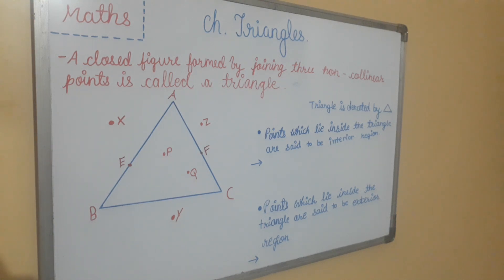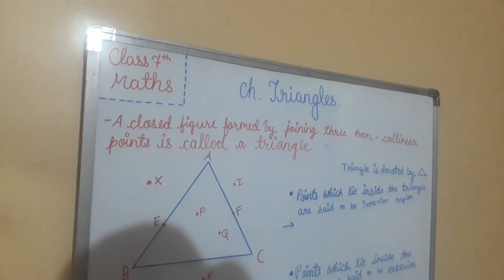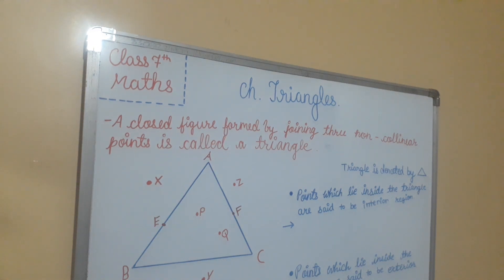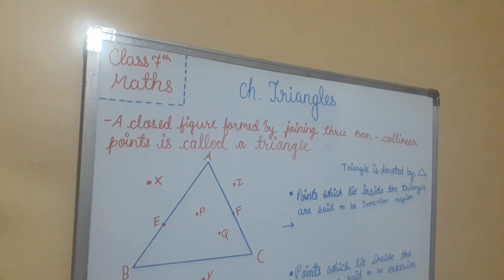A closed figure formed by joining three non-collinear points is called a triangle. A triangle has three vertices namely A, B, C; three sides namely AB, BC and AC; and three angles namely angle A, angle B and angle C. The three angles and the three sides are known as the three parts or elements of the triangle, so a triangle has six parts.